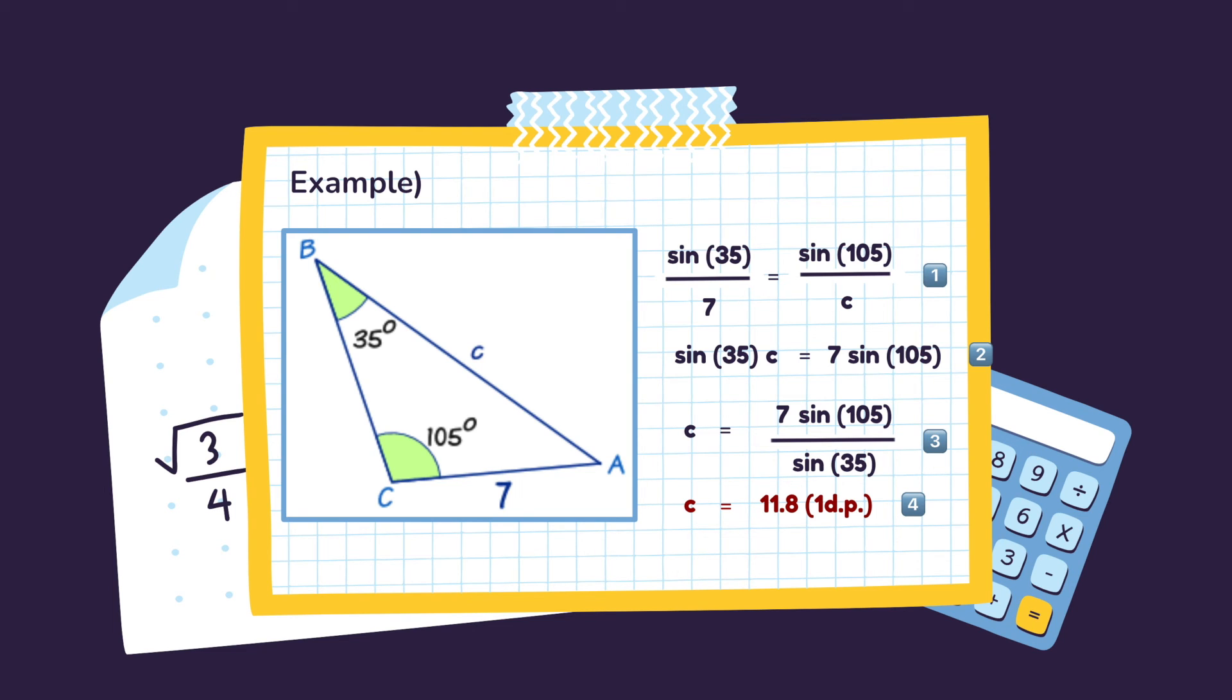As we finished understanding the law of sines, let's figure out this example question together. In the figure, the two angles are given as 35 and 105, and one side is given as 7.